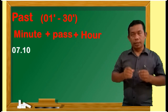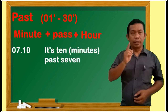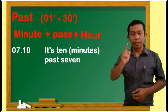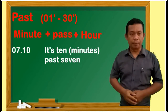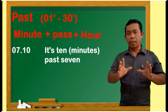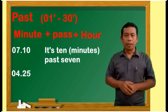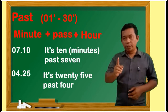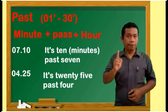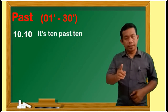For example: jam 7.10 in English we say 'It's 10 minutes past 7.' Kata 'minutes' bisa kita sebutkan, bisa tidak. For example, jam 4.25 — we can say 'It's 25 past 4.' Jam 10 lewat 10 — 'It's 10 past 10.'